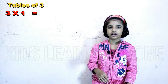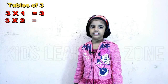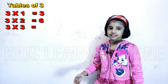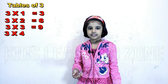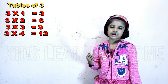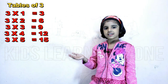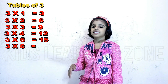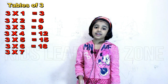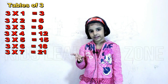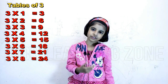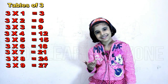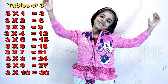Three ones are three. Three twos are six. Three threes are nine. Three fours are twelve. Three fives are fifteen. Three sixes are eighteen. Three sevens are twenty-one. Three eights are twenty-four. Three nines are twenty-seven. Three tens are thirty.